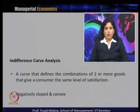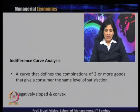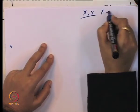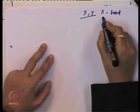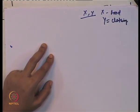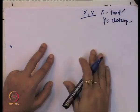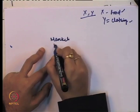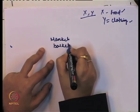The indifference curve defines the combination between two or more goods that gives the consumer the same level of satisfaction, and it is negatively sloped and convex. Let us take an example of how we can draw the indifference curve. We consider two goods: X is food and Y is clothing. There are different consumption baskets which give different combinations of food and clothing.